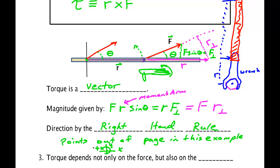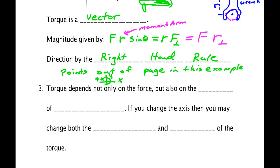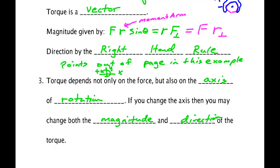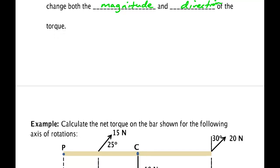As I mentioned already, the torque depends not only on the force but also on the axis of rotation because it depends upon r. If you change the axis that you're talking about rotating, you change r. This can then both change the magnitude and direction of the torque. In the next video we will do an example that shows this.